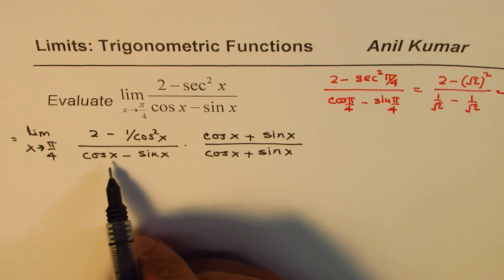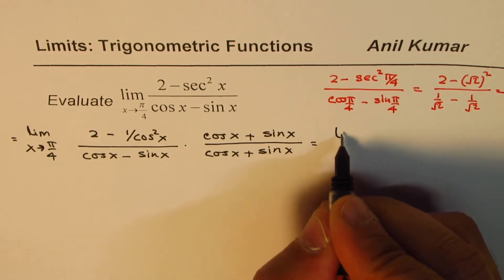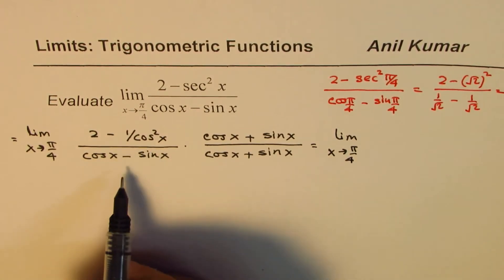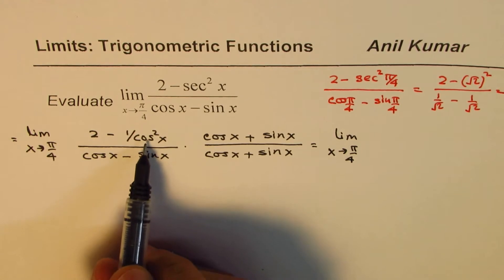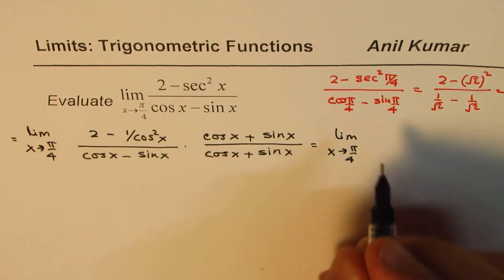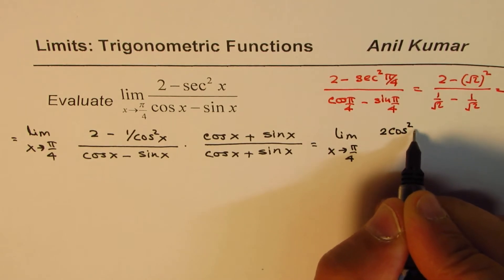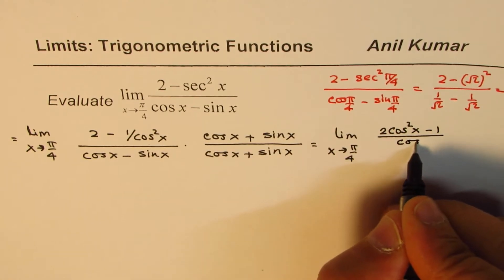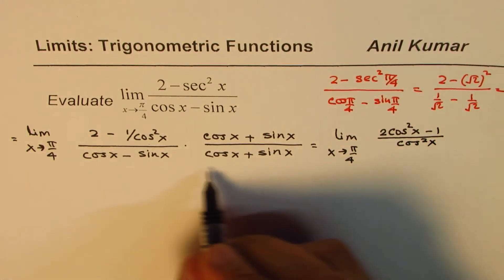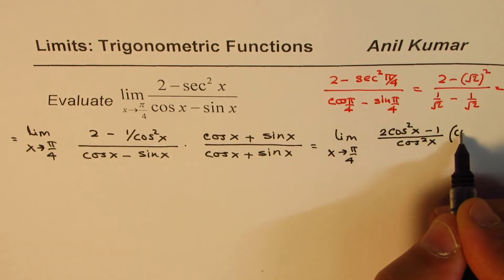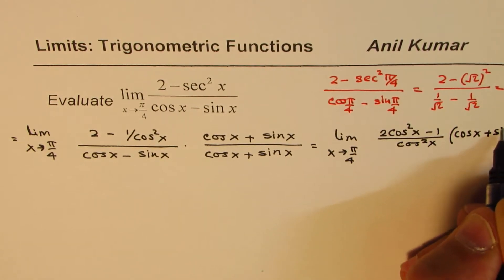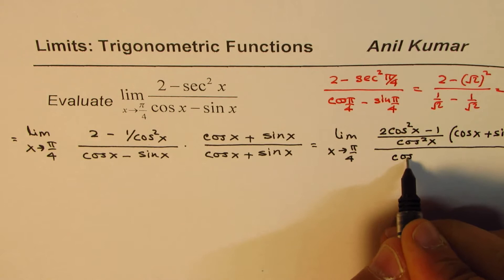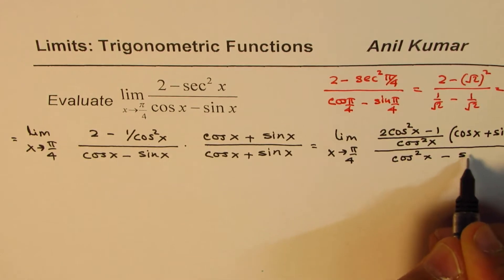The denominator becomes cos squared x minus sin squared x. As far as the numerator is concerned, we take cos squared x as common, and we get 2 cos squared x minus 1, divided by cos squared x. This entire expression is then multiplied by cos x plus sin x, divided by the difference of squares: cos squared x minus sin squared x.